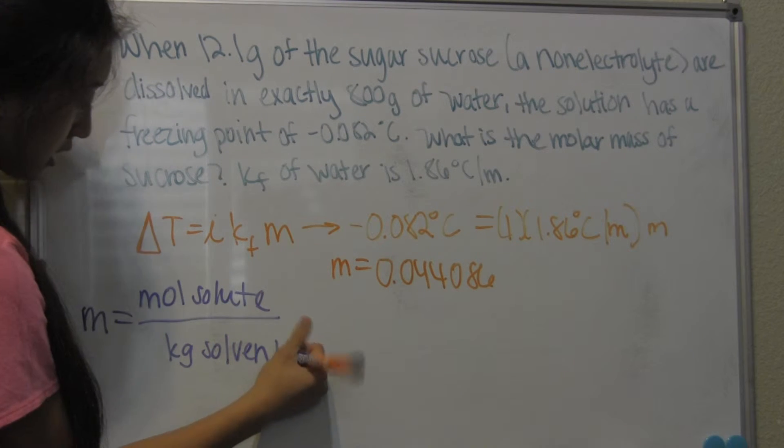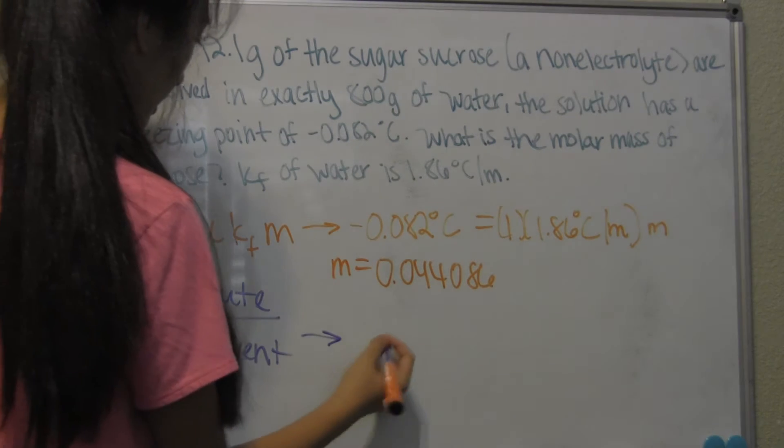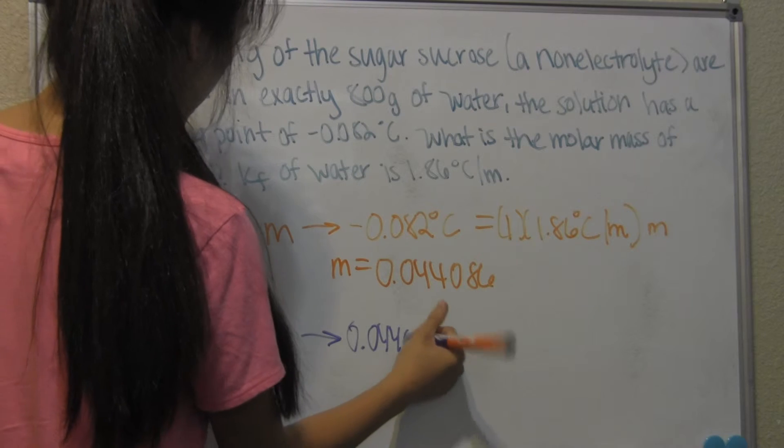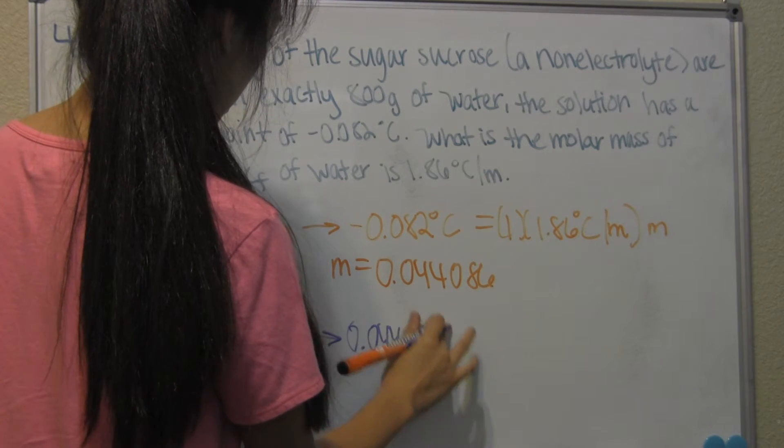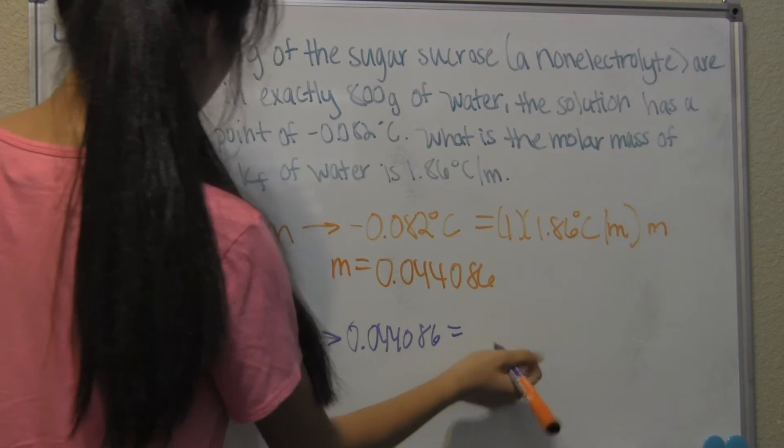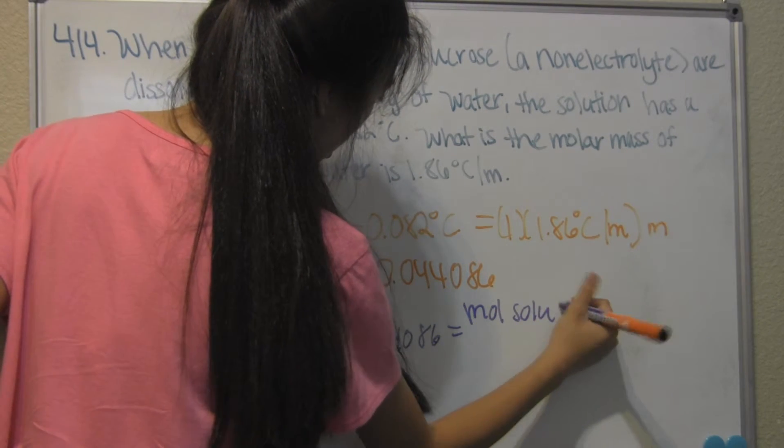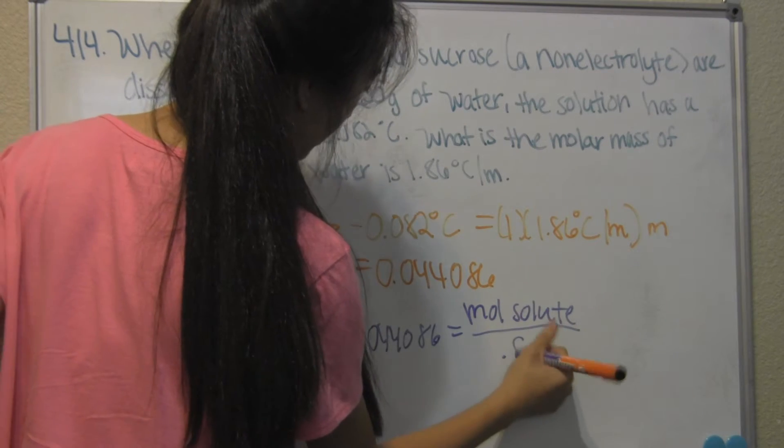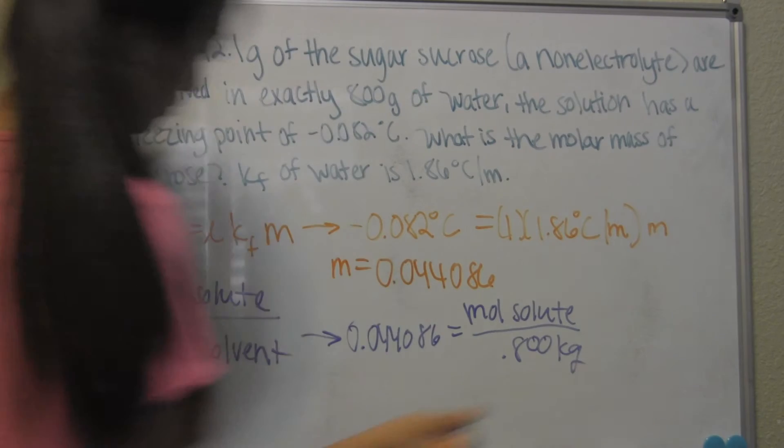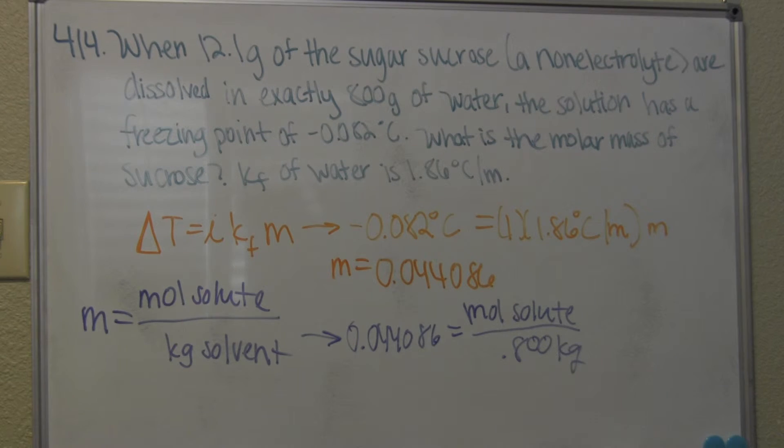Since we're trying to find the moles of solute, what we do is put the 0.044086, and that equals the moles of solute over the kilograms of solvent, which is 0.800 kilograms. All you have to do here now is multiply the molality times the kilograms of solvent and you end up getting 0.035269 moles of solute.